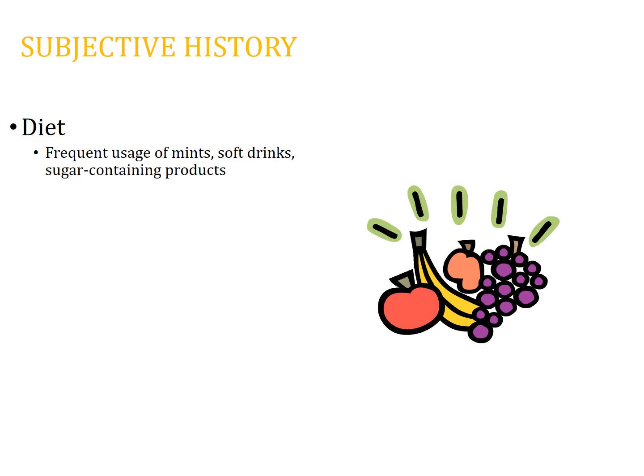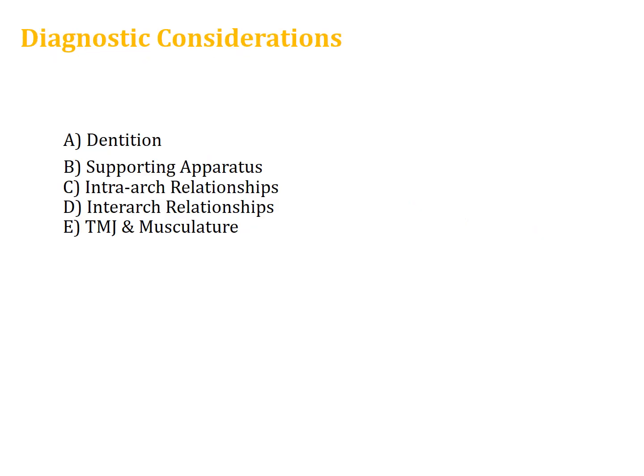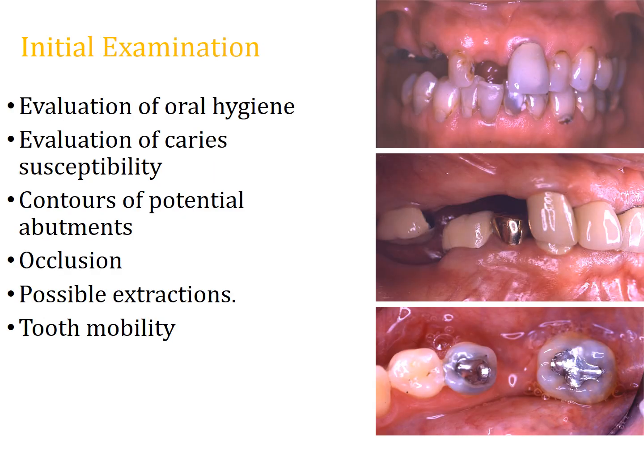Diet is very important. Most removable partial denture patients are nutritionally deficient due to inability to chew adequately and due to trauma or social stigma. You also need to diagnose the remaining dentition and supporting tissues, the interarch relationship — whether it is Class 1, Class 2, or Class 3 — the interarch space, and assess the temporomandibular joint and musculature for any TMJ disorders.